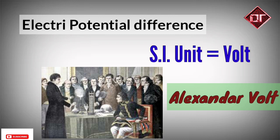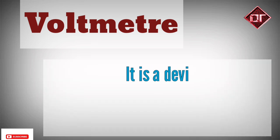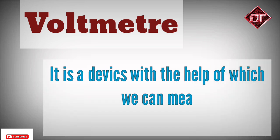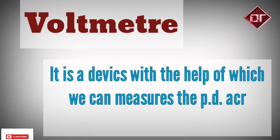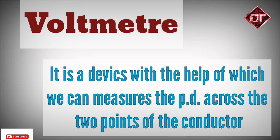Now let's move on to the voltmeter. Let's look at the definition of voltmeter. A voltmeter is a device with the help of which we can measure the potential difference across two points of a conductor.